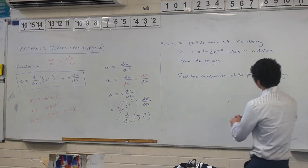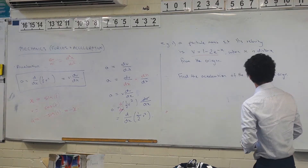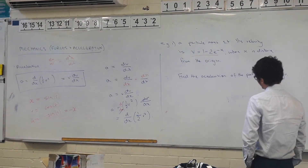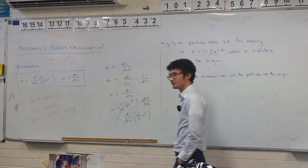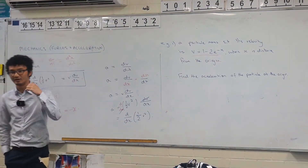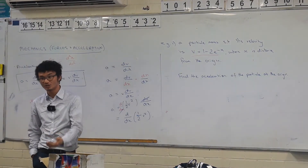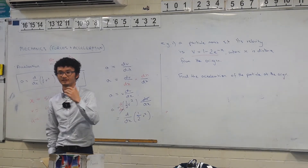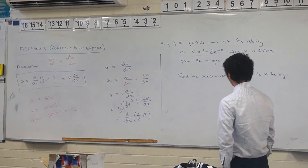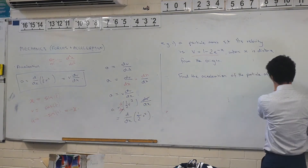We have our velocity expression here and this time it is in terms of x, where x is the distance from the origin, and we want to find the acceleration of the particle at the origin. Like the types of questions you can expect when doing this, they may ask you to find the acceleration, find an expression for the acceleration, find displacement, or a whole variety of things. In this case we want to find the acceleration at a specific point — at the origin.